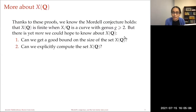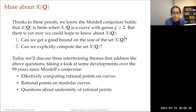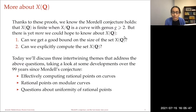More generally, can we explicitly compute the set of rational points on curves of genus two or more? What I'd like to do today is discuss roughly three different themes that address these questions, giving a survey of developments over the 99 years since Mordell's conjecture. The first theme: effectively computing rational points on curves. The second: modular curves and techniques for understanding their rational points. Third: uniformity of the size of the set of rational points.